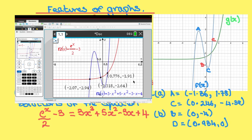Let's write the answers to part c. So x = -2.07, -0.318, or 0.776.